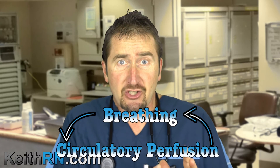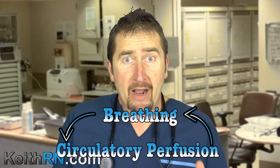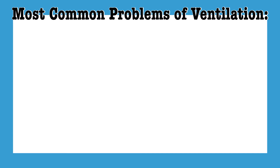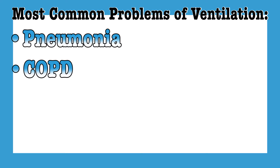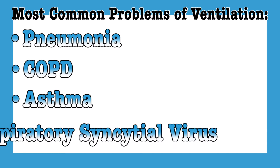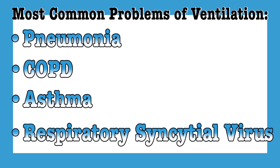Therefore, breathing and circulatory perfusion are interrelated, and this relationship must be recognized by the nurse. The most common problems of ventilation you will see in the clinical setting include pneumonia, COPD, asthma, and in the pediatric population, asthma and RSV. Let's briefly contextualize this with an elderly female who comes to the emergency department in respiratory distress.